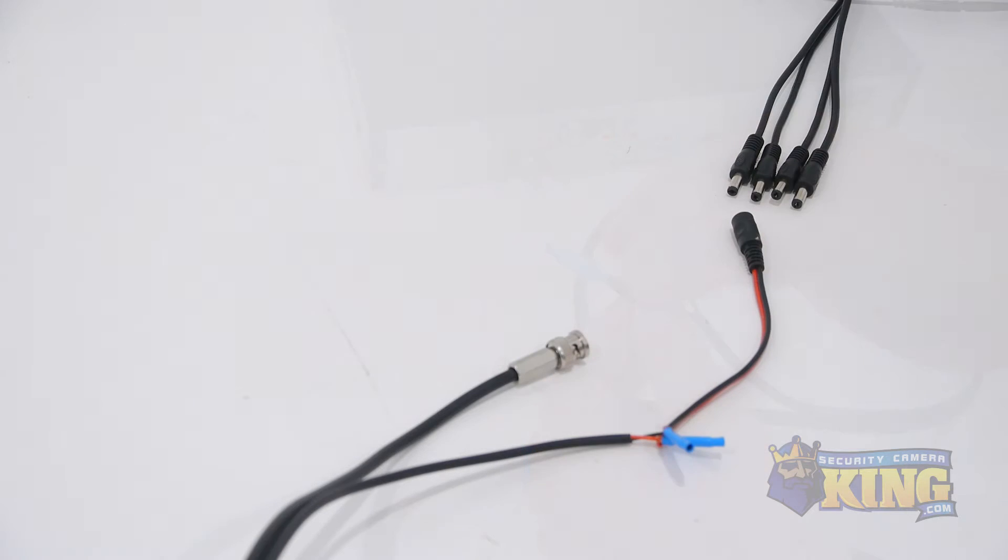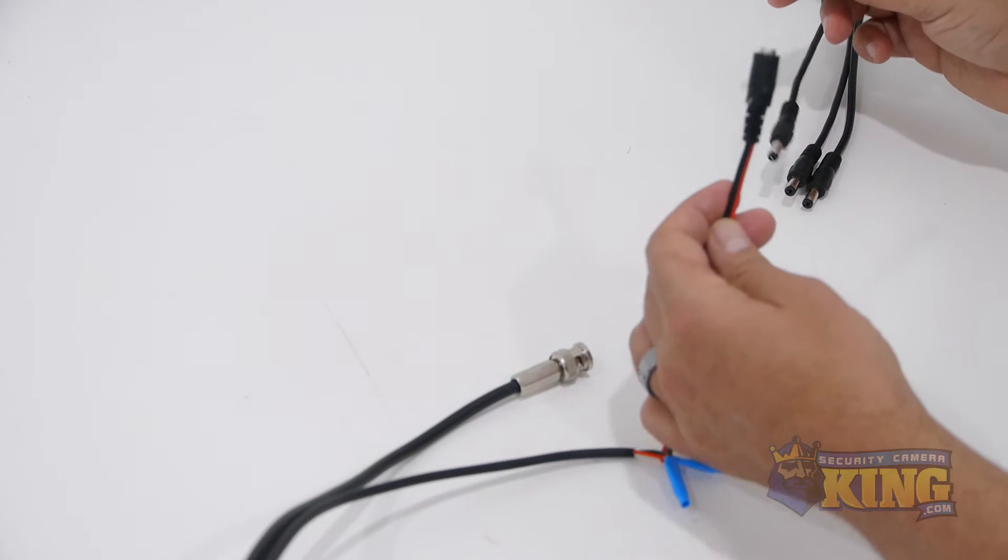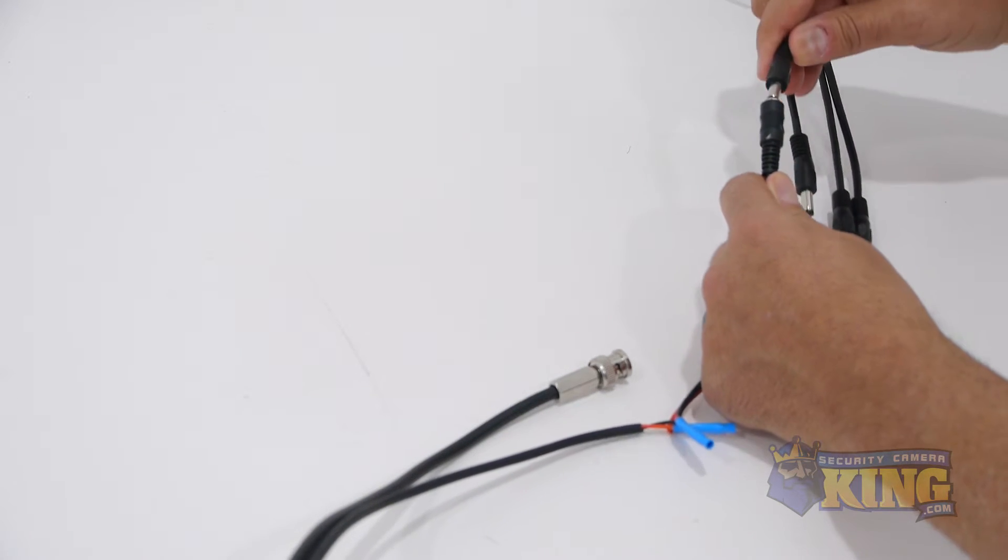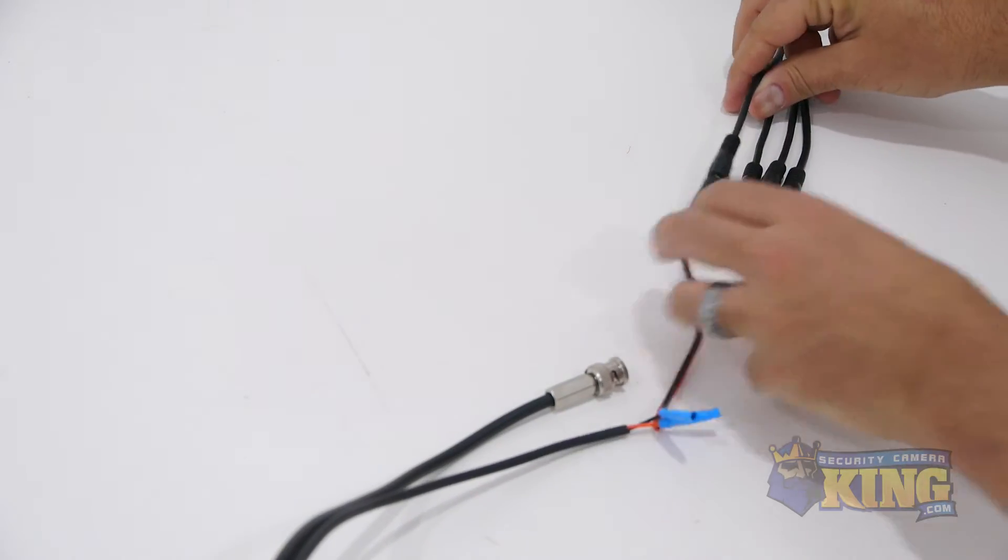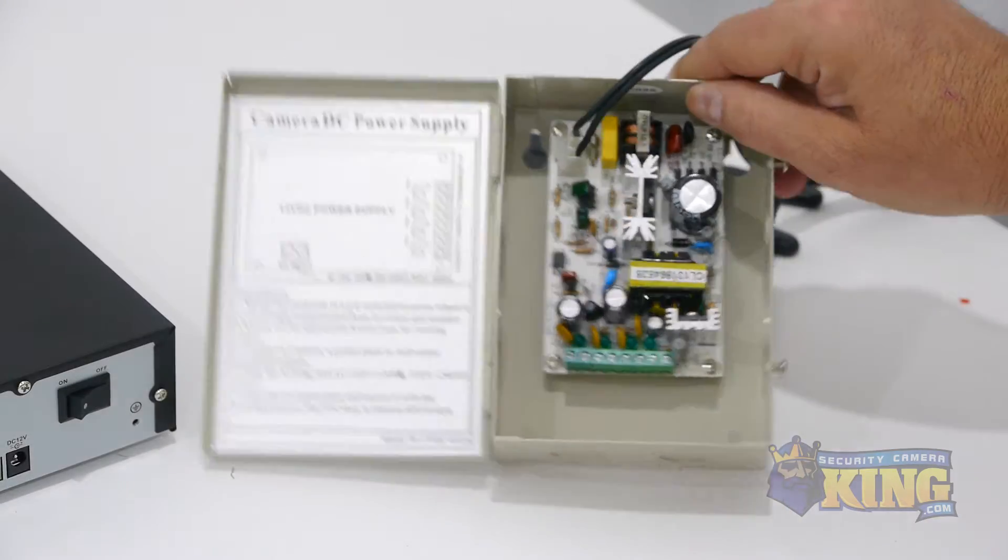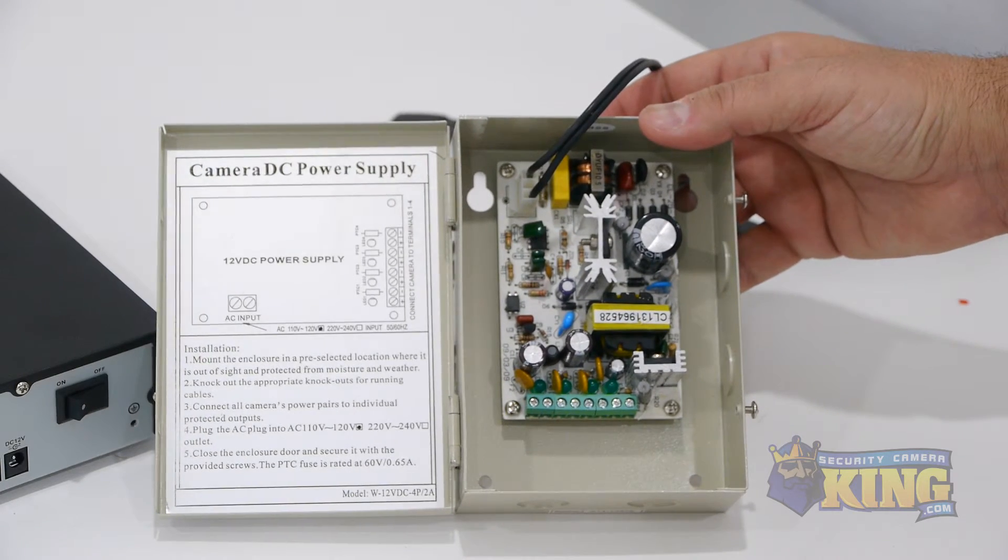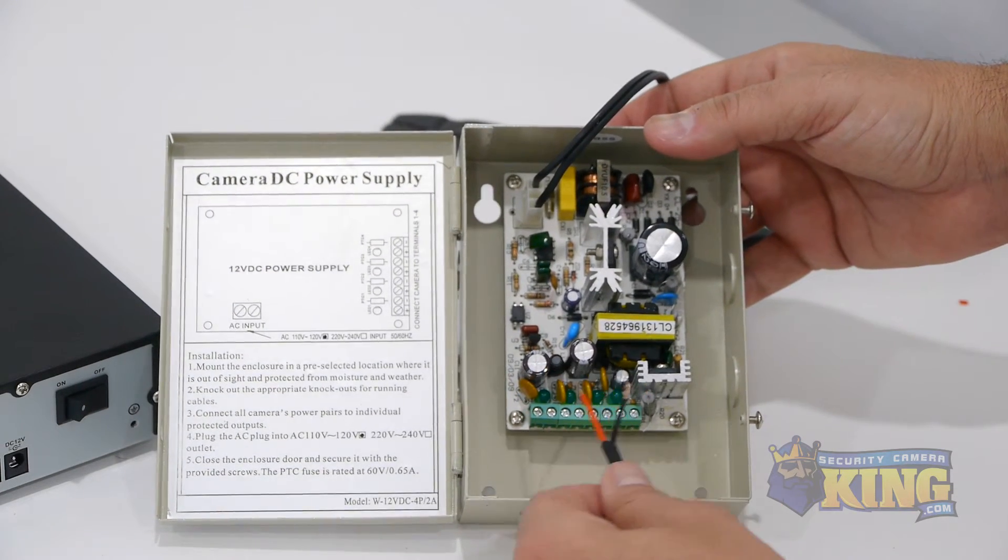If you're using one of our plug-and-play power supplies, you will also want to add a PT4 male power lead to the other end of the cable to plug in the power supply. If you're using a power box, you can simply run the power wires on the Siamese cable directly into the power box.